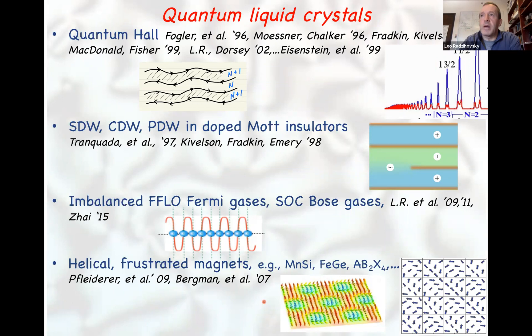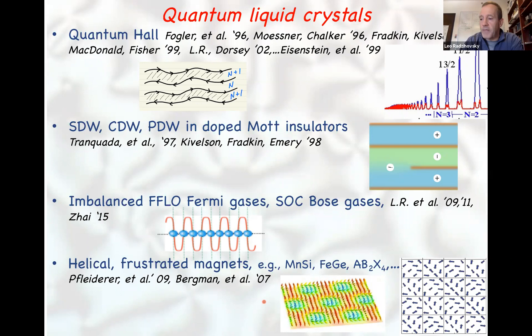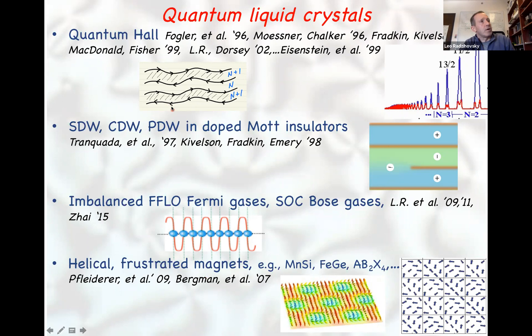Building from this, the other motivation — more conventional, having nothing to do with fractons — is simply the observation that there are many physical systems, including quantum electronic and bosonic systems, where one encounters condensation or ordering at a finite wave vector. These could be crystals, but they could also be smectic-like objects where there is columnar-like order and condensation at a single wave vector or its multiples.